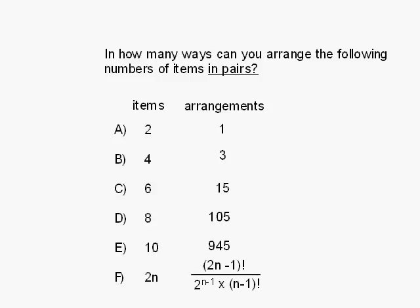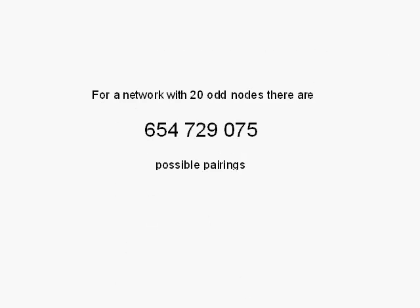In fact, this monster is the formula for it. So if we had 20 odd nodes, then there are that many possible pairings, just over half a billion possible pairings. So this algorithm gets very difficult very quickly.